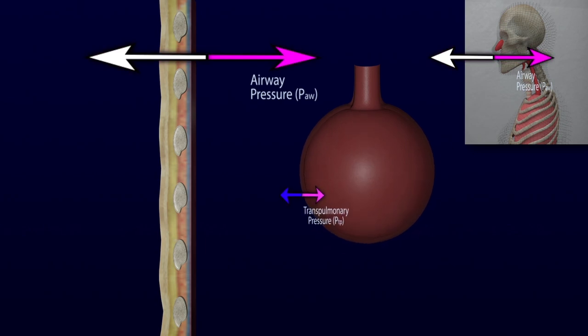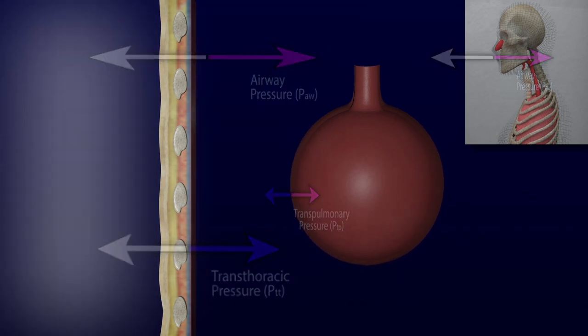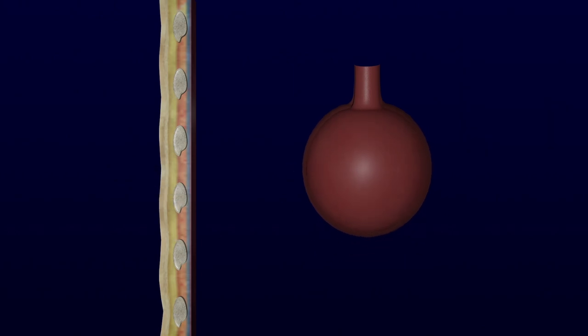On the alveolar side, this pressure is the sum of the transpulmonary pressure between the alveolus and the pleural space and the transthoracic pressure between the pleural space and the atmosphere. The pressure measured by the ventilator at the airway opening has no way of discerning between these two components.